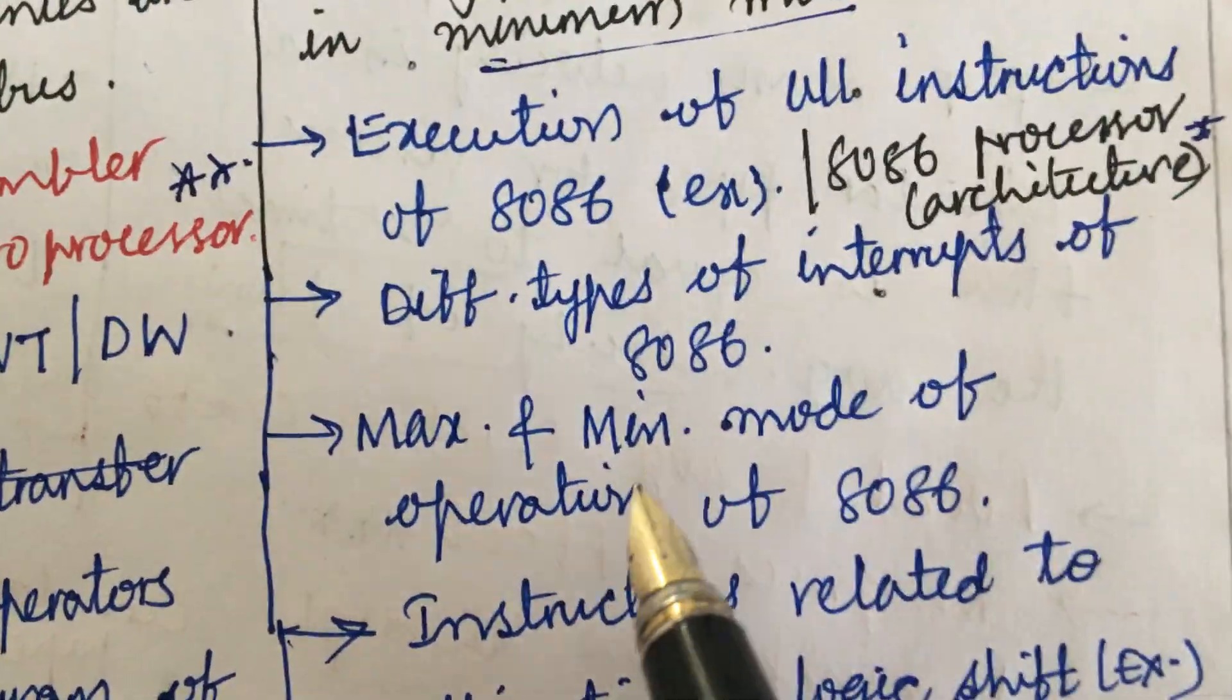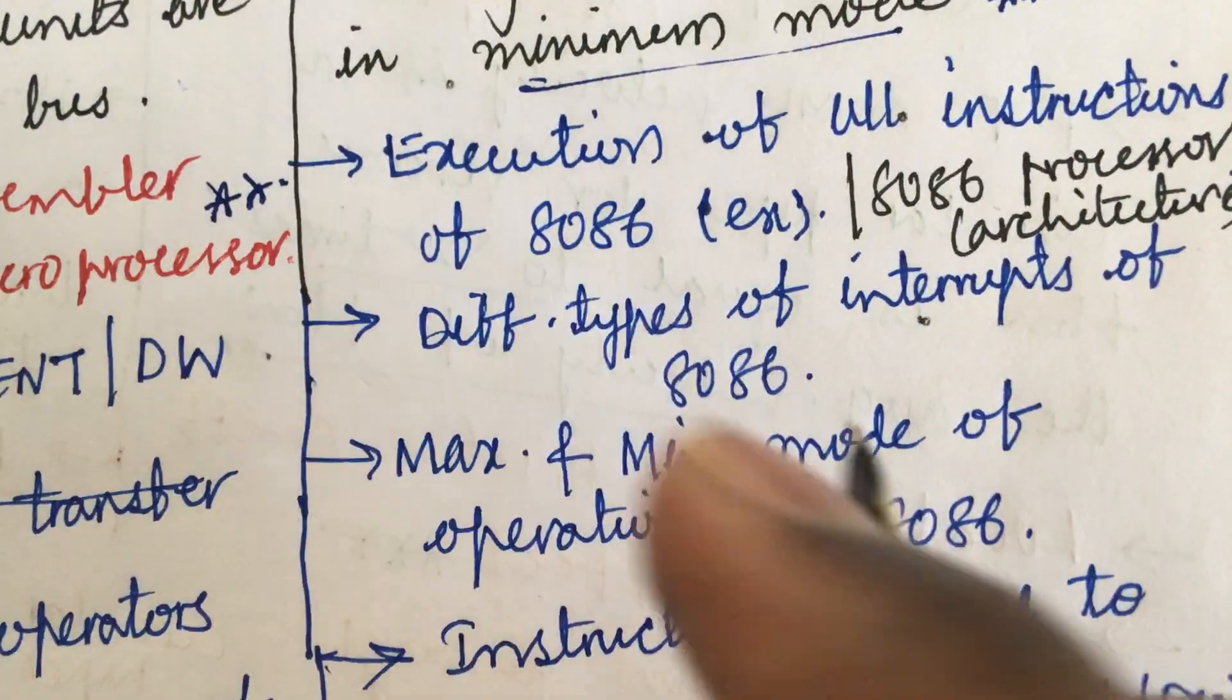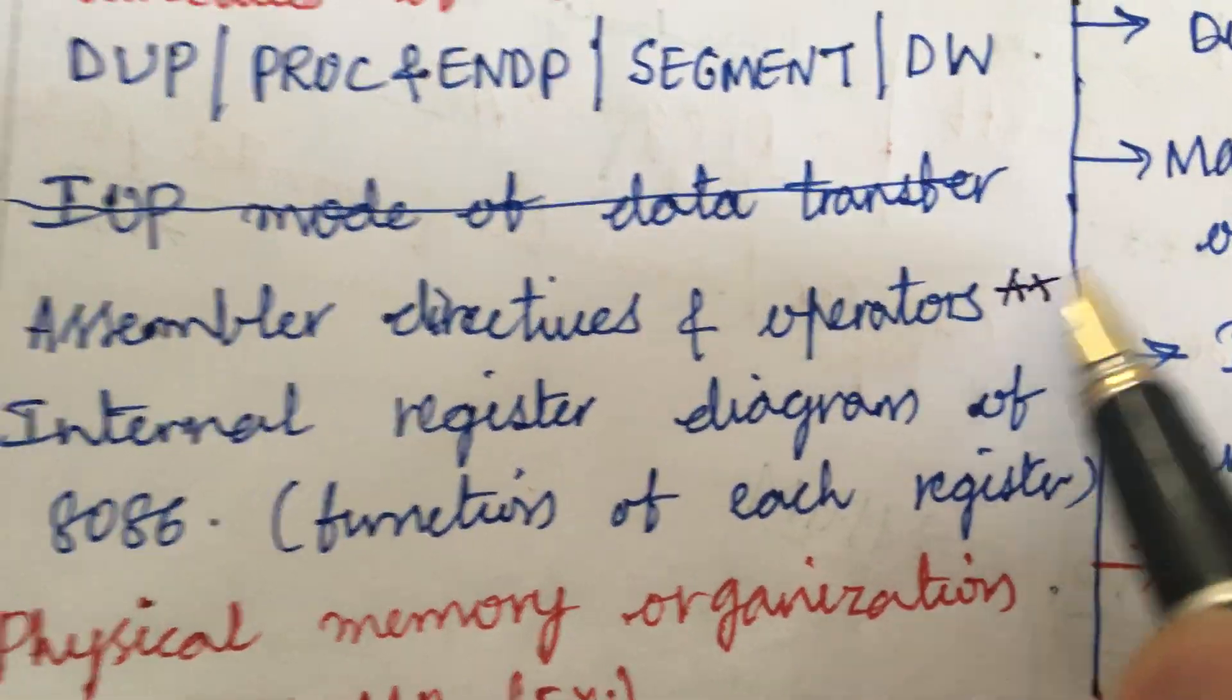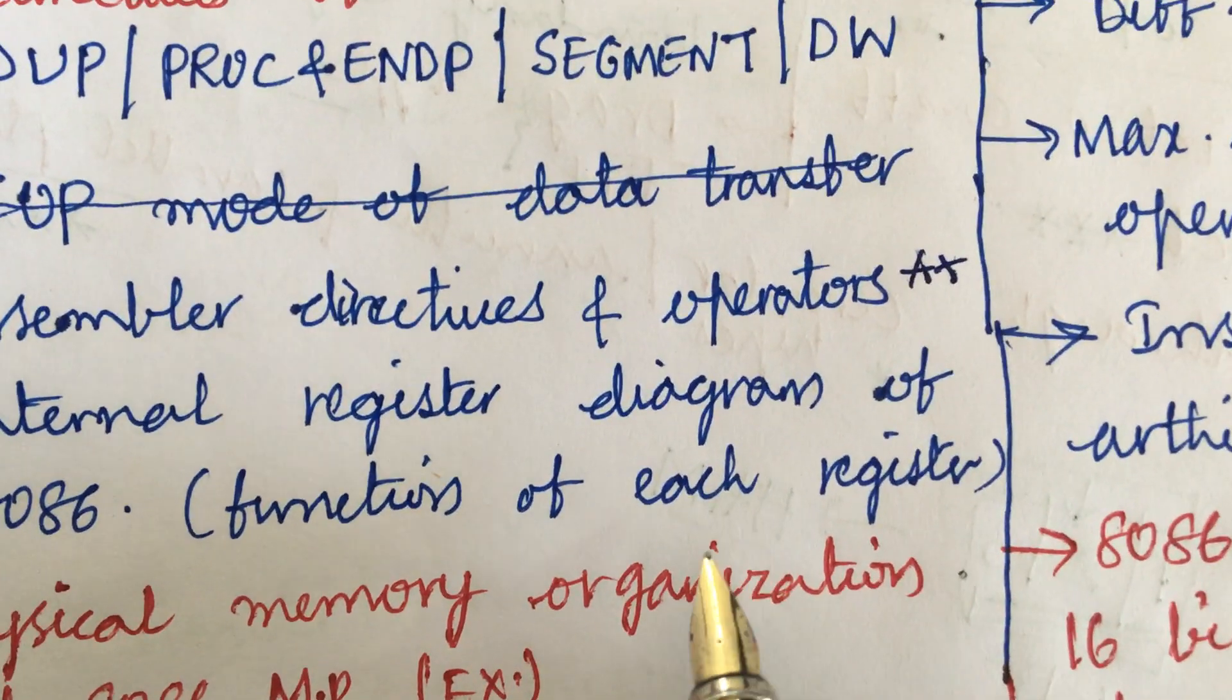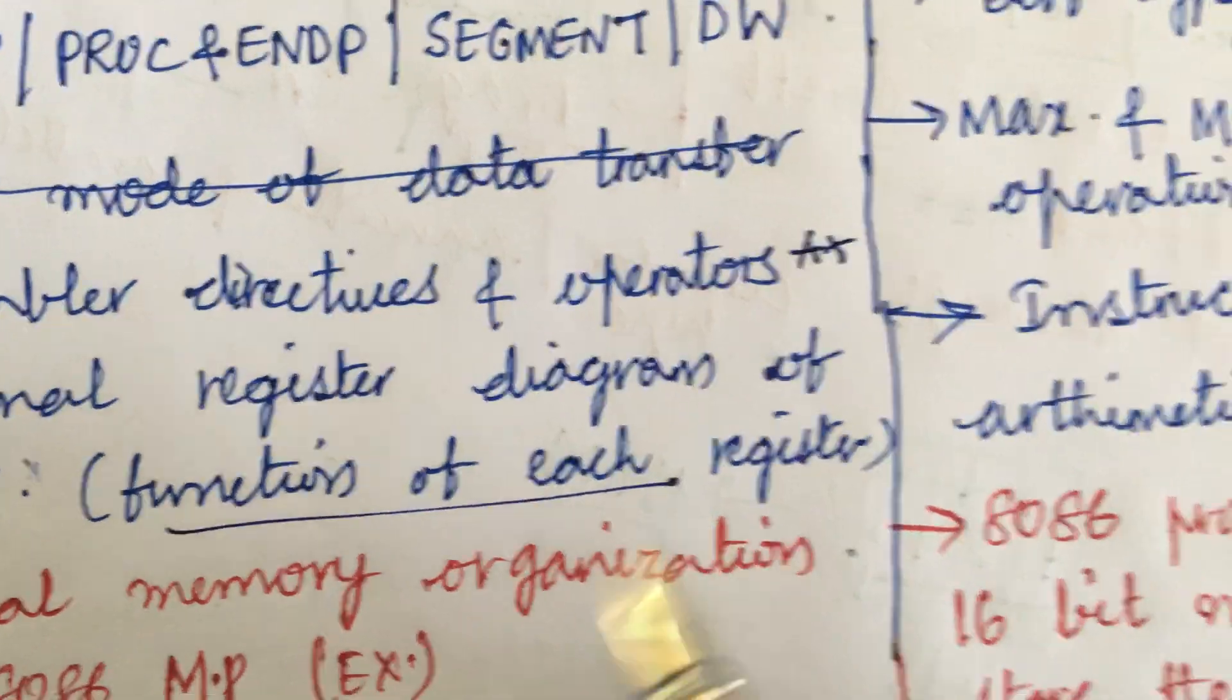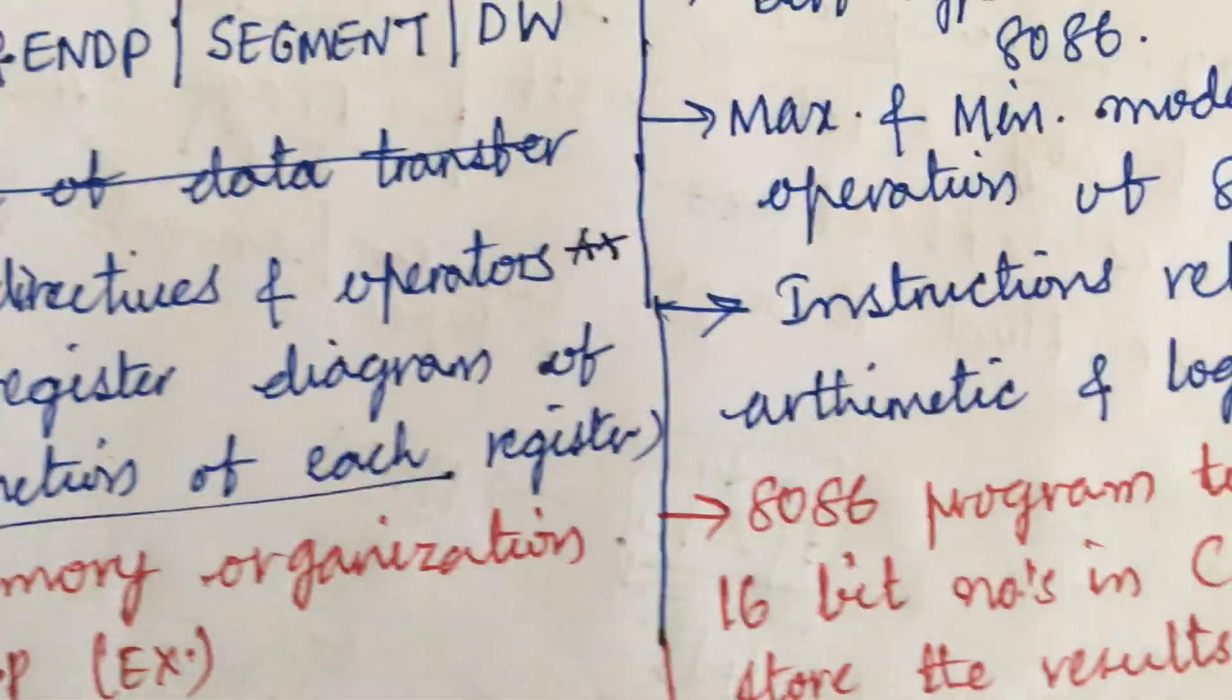I have kept the many questions here for the third and fourth. If you work out this you are going to get 30 marks for sure maximum. Maximum and minimum mode of operation of 8086, assembler directives and operators may be the short question. Internal register diagram of 8086 and the functions of each register if they ask this is a long question and they may ask in short the functions, instructions related to arithmetic and logic shift.